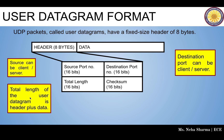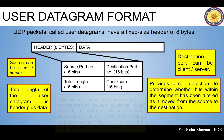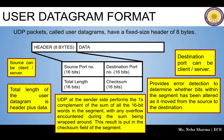The checksum bits are very important for checking errors. UDP can detect an error — it can tell whether all bits were transferred or whether the data was received at the receiver — but it cannot correct the data. It can only indicate an error. It provides error detection to determine whether bits within the segment have been altered as it moved from source to destination.